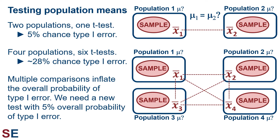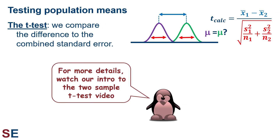We need a new test with a 5% overall probability of type 1 error. When we have just two populations, we use the t-test to decide if the population means differ. When doing a t-test, we compare the difference between the sample means to the combined standard error. The bigger the t-calculated value, the more likely it is that the population means differ, because that indicates cases where the difference between the sample means is large relative to the variation within the groups. Watch our intro to the two-sample t-test video for more details.